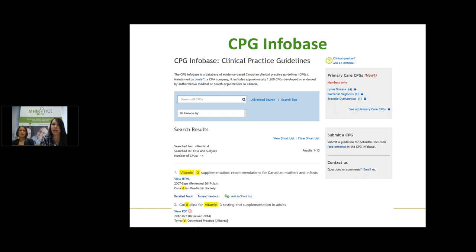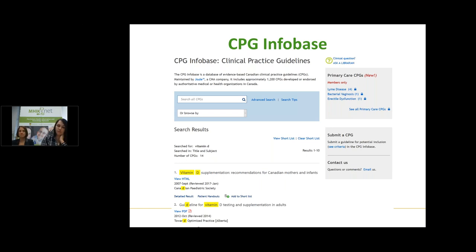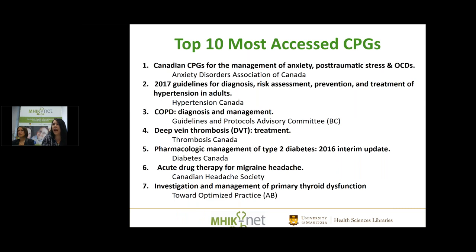If you're not finding what you're looking for in the top ten results, you may want to refine your search, or there may be no guidelines available in Canada on that topic. For example, if we search 'vitamin D,' these vitamin D guidelines come up and you can just click to view them. Most guidelines linked from this site are freely available as full text, but if you encounter a paywall, contact your librarian. The most commonly accessed clinical practice guidelines tend to be about the most common conditions — COPD, hypertension, diabetes — typically about management or treatment.